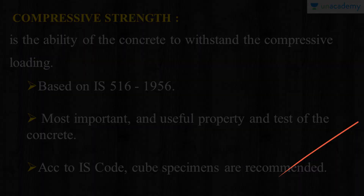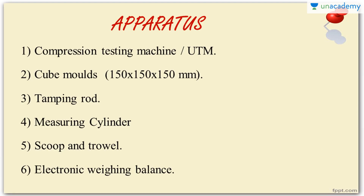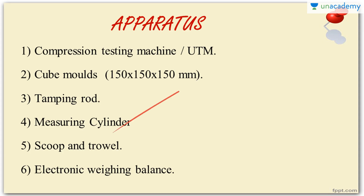Now let's move on to the test itself. Let's see what apparatus is required. First and foremost, we need the compression testing machine or the universal testing machine, the UTM. We need cube molds in dimensions of 150 by 150 by 150 mm, a tamping rod, measuring cylinder, scoop and trowel, and also an electronic weighing balance.